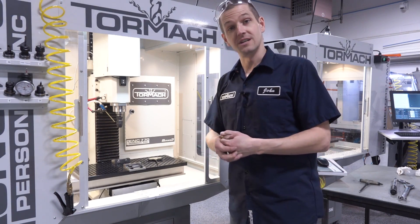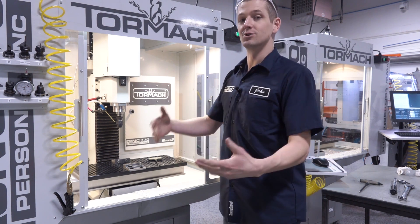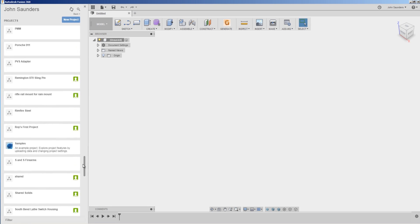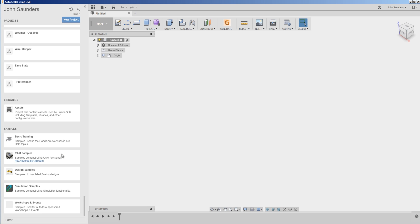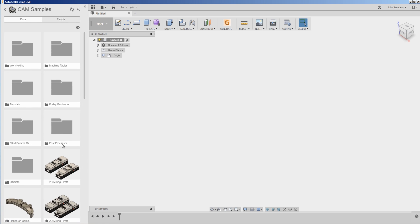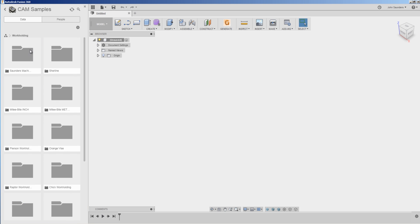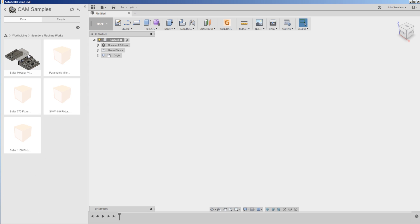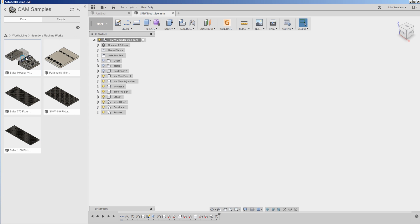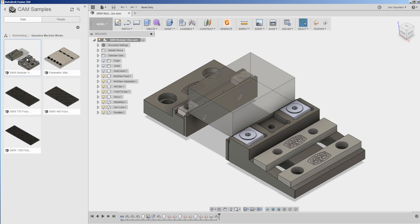Solid models are available to download and use in your setups in Fusion 360. Scroll all the way down to Cam Samples, Work Holding, Saunders Machine Works, and here's the mod vise that you can use in your work holding, fixturing, and setups. Thanks, folks.